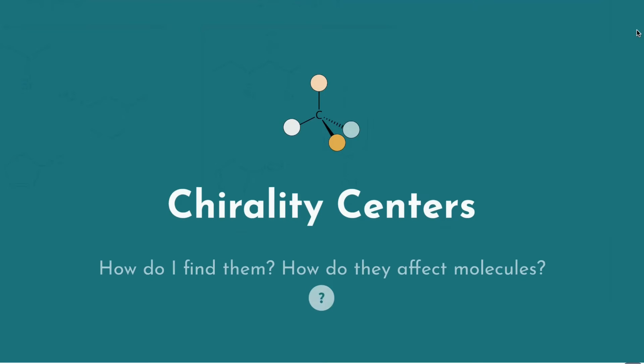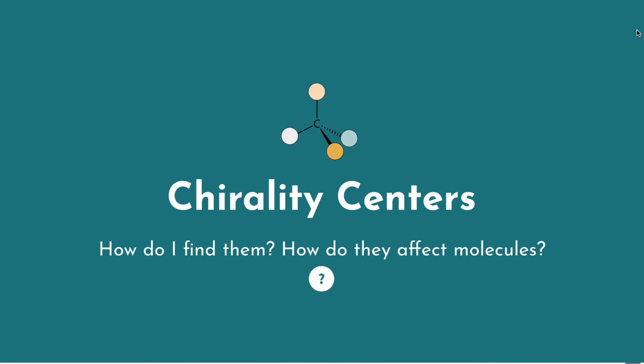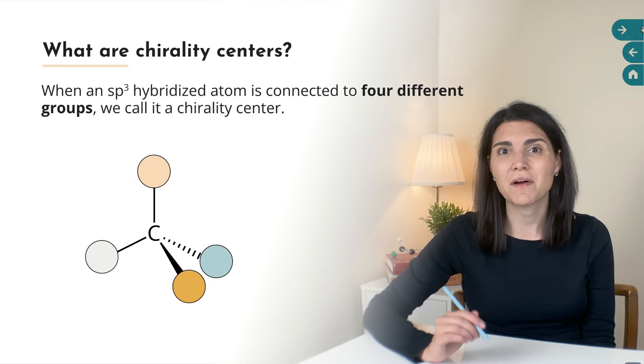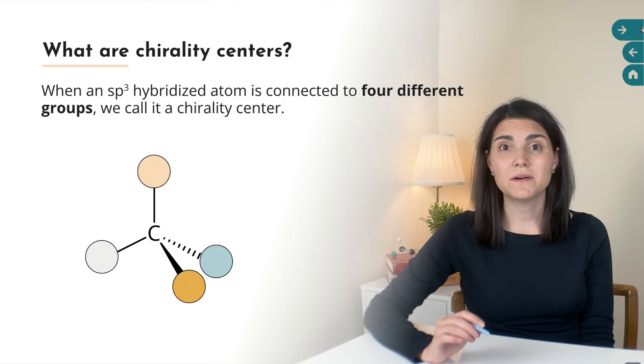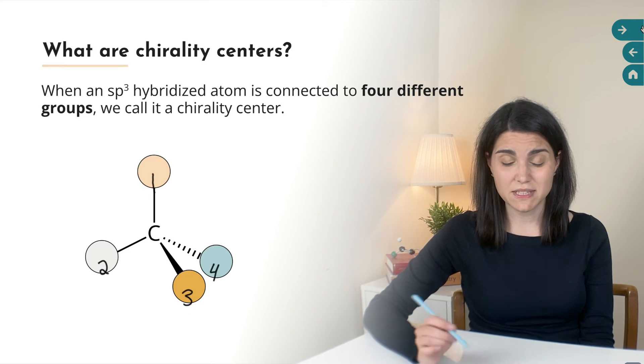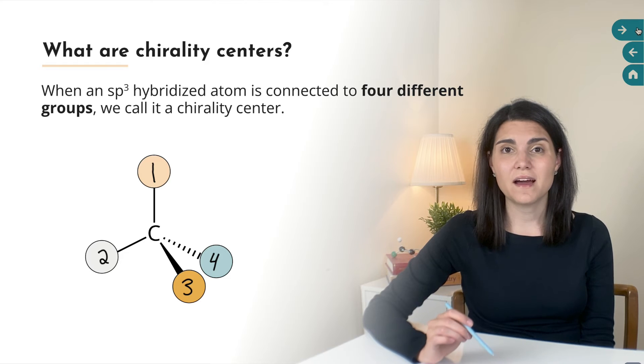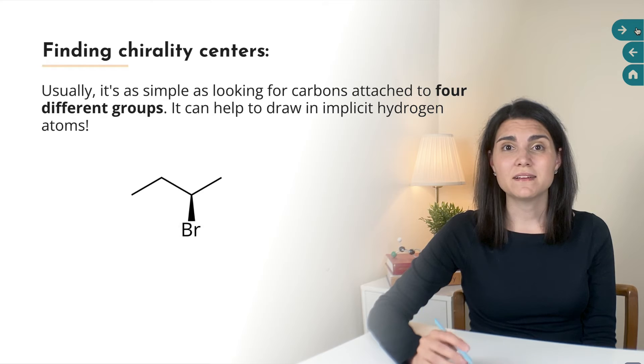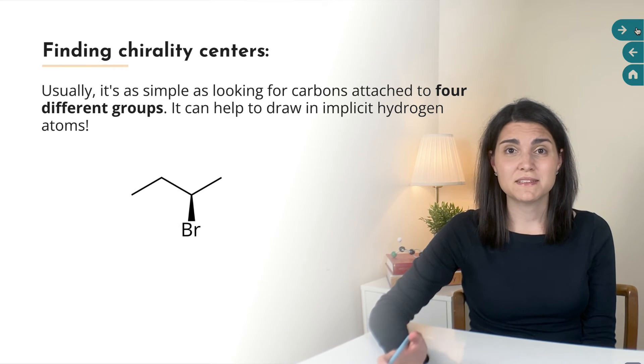Now we're going to talk about the concept of chirality centers. When an sp3 hybridized atom is connected to four different groups, we call that atom a chirality center. So here we have an sp3 hybridized tetrahedral carbon atom and it's connected to one, two, three, four different groups. And so we would say that that carbon atom is a chirality center. Usually it's pretty easy to find chirality centers on molecules. It's as simple as looking for tetrahedral atoms that are connected to four different groups.